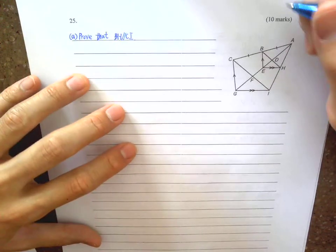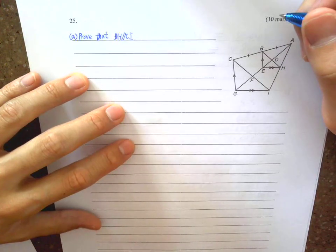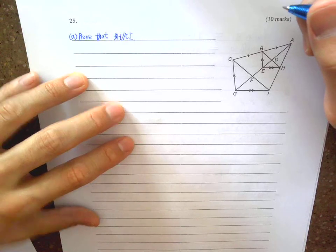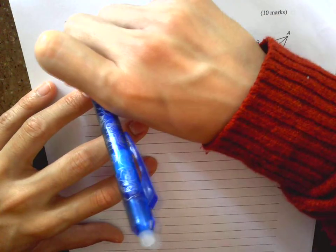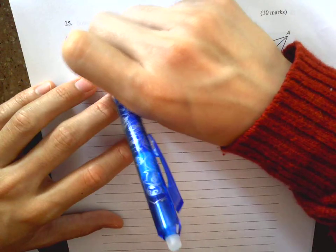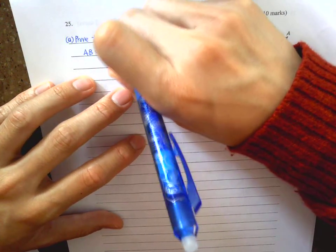So first you're going to prove BH parallel to CI. If you look at it carefully, you will see that AB equals BC, this is given.